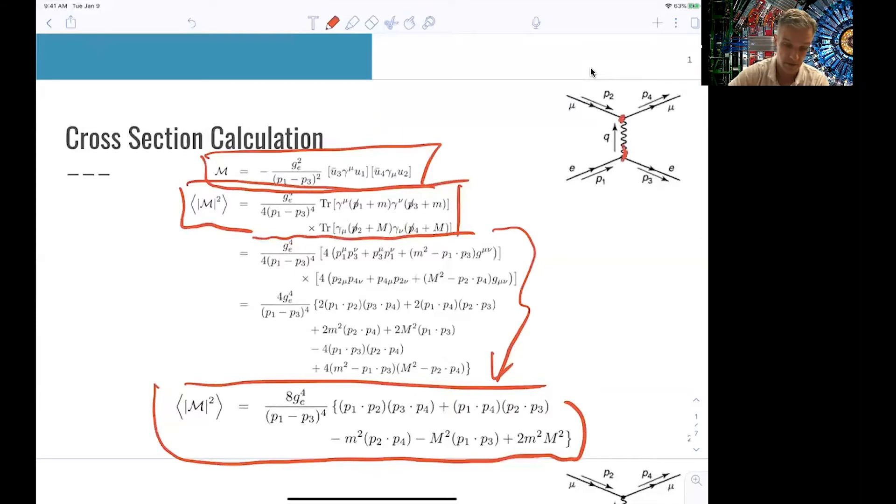The first part is you want to see what are the dependencies on the number, on the couplings involved. You see this G square, for example. That's a rather important effect. You also want to see, through Fermi's golden rule, how we get actually then to the cross-section from the matrix element calculation.